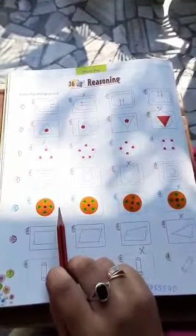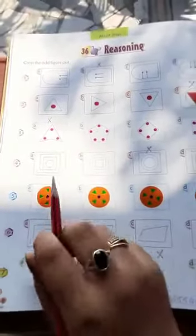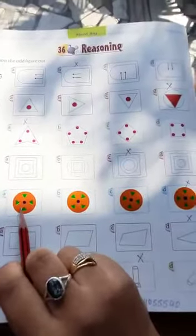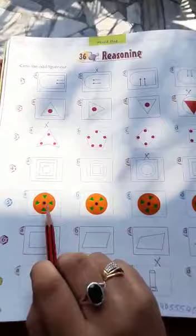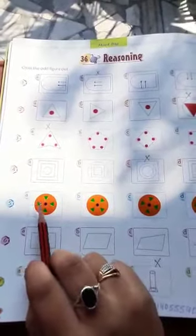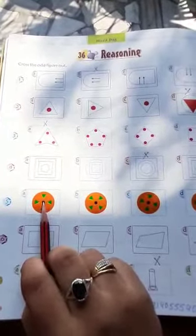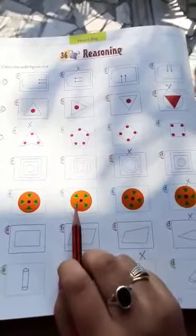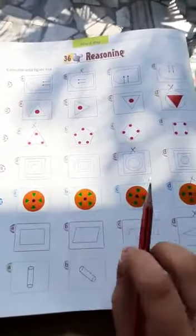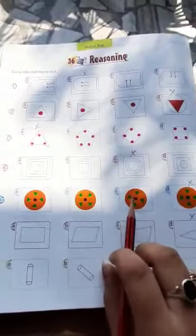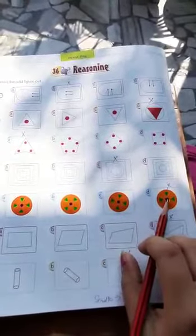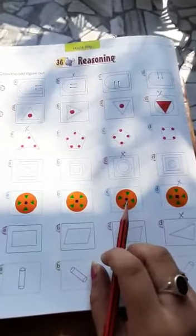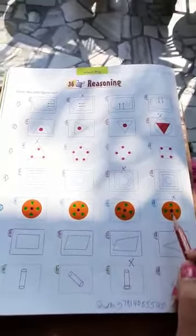In fifth question, outside one big circle of orange color is made and inside it four triangles are made. And in center of four triangles, one circle is made. In same way, in B part also, same figure is made. It is just rotated. In C part also, it is similar figure. But in D part, in center, a square is made. Whereas in other figures, it is made a circle in center. So D is the odd one figure.